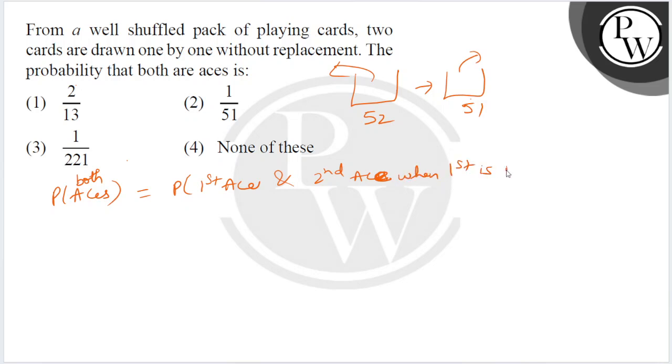When first is ace, using multiplication theorem directly - first time getting an ace, the probability is how much? There are 4 aces, so it's 4 by 52.